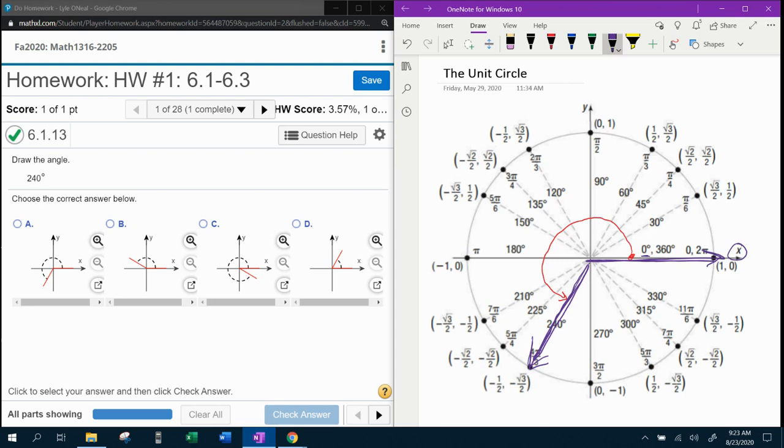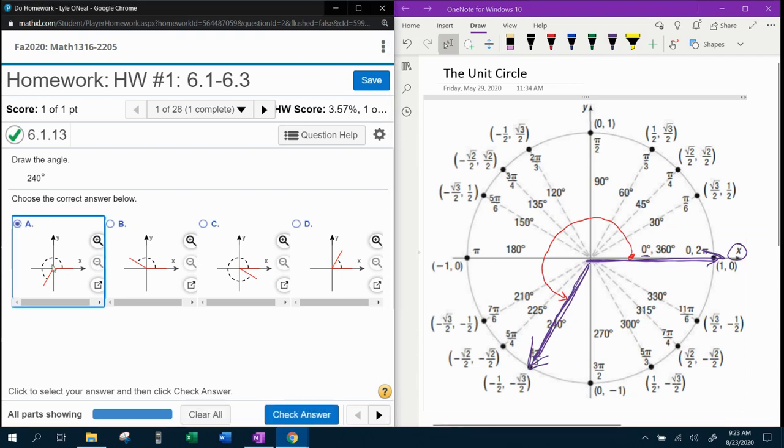So this is the way that you would draw the angle of 240 degrees in what we would call standard position there. Okay. So now to come over here to MyLabMath and see if we can find a drawing that is similar to the one we drew. And that looks like answer choice A.